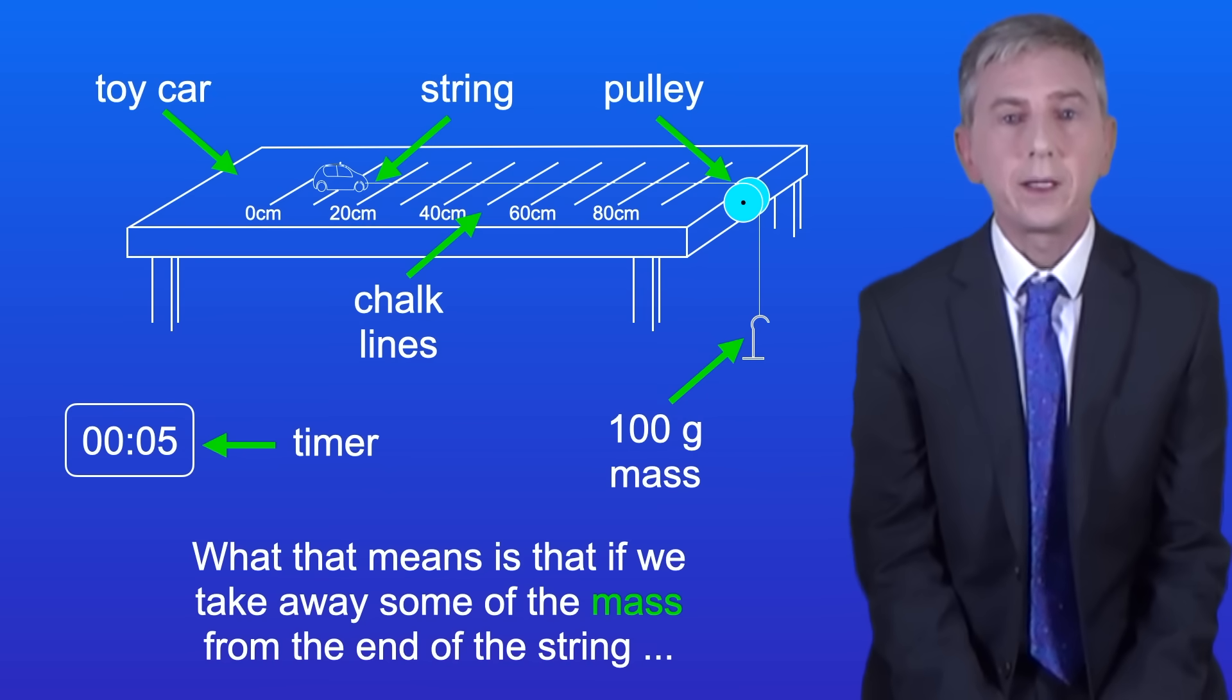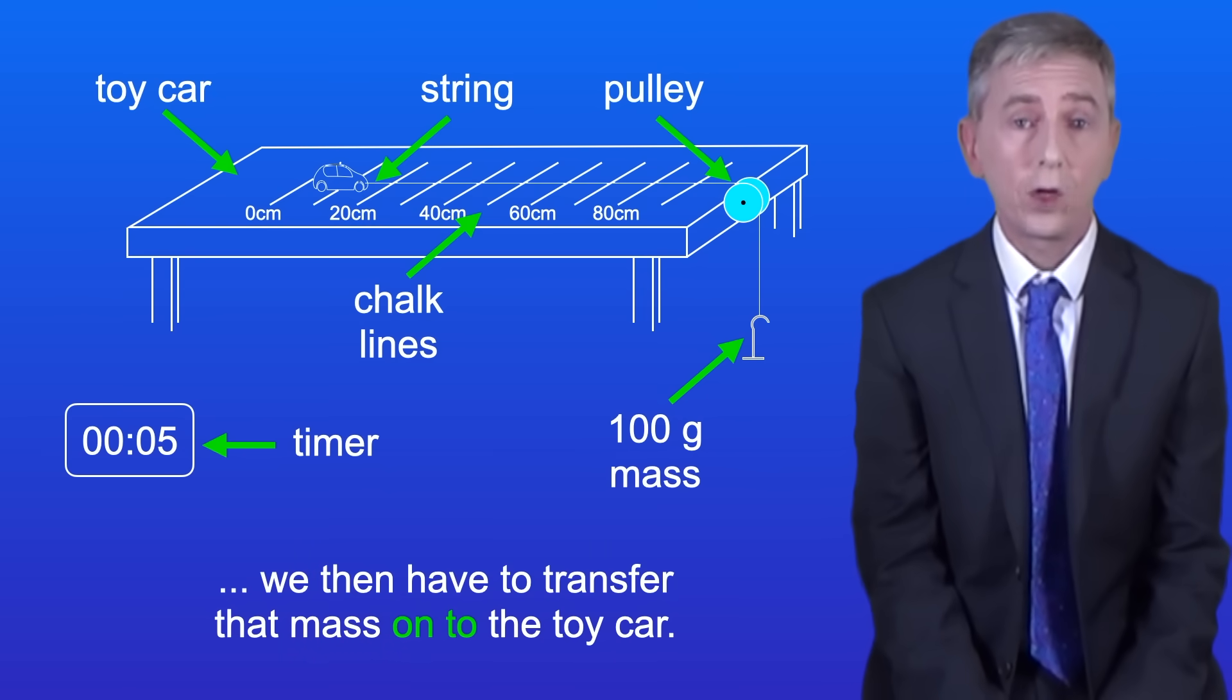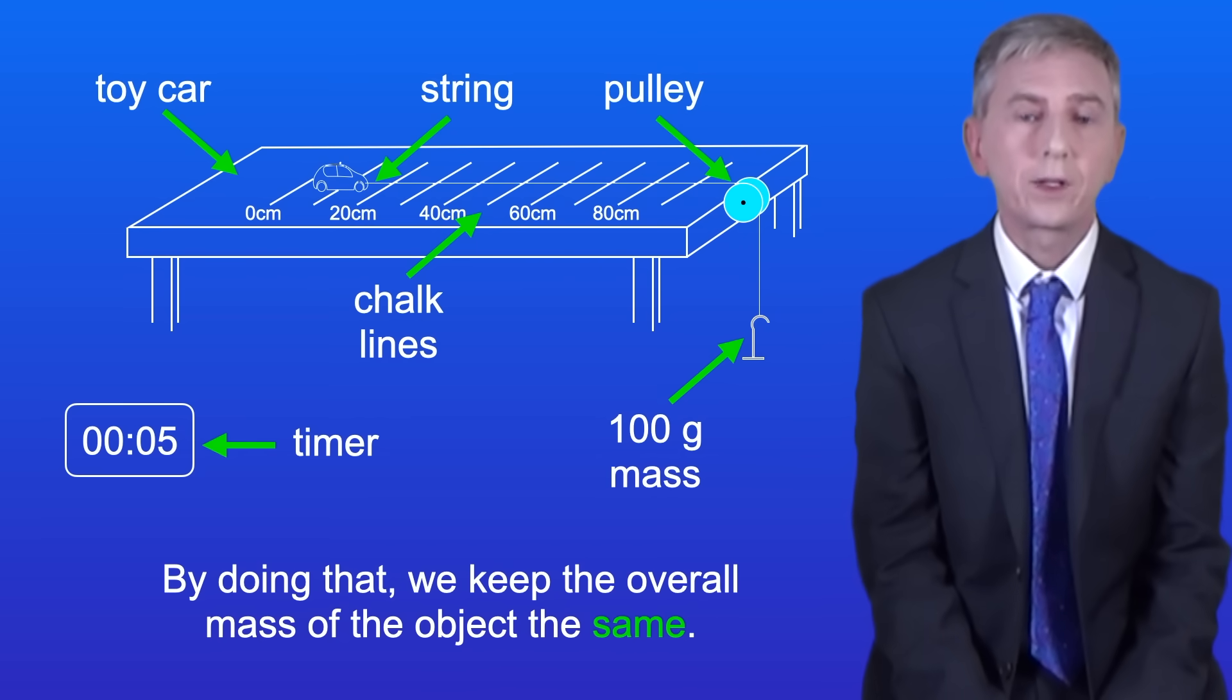So if we take away some of the mass from the end of the string, we then have to transfer that mass onto the toy car. By doing that we keep the overall mass of the object the same.